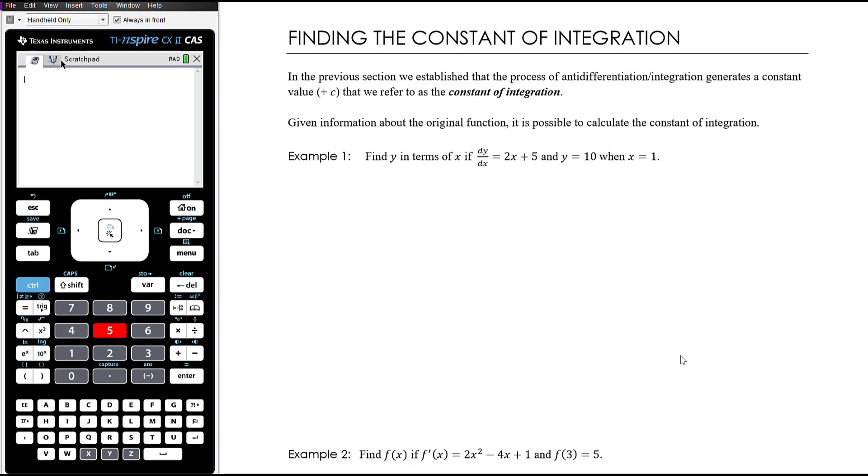Okay, so example one we want to find y in terms of x if dy/dx is equal to 2x plus 5. So we've been given the derivative and we want to get back to the original function. We know that the original function is the antiderivative of the derivative. So that means it is the antiderivative of 2x plus 5 with respect to x.